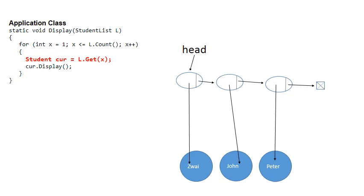The way a singly linked list is structured, if you want to go to the element at position 4, for example, you will have to start at the head and traverse until you get to the fourth element. Therefore, a singly linked list is called a linear access list. You can't jump to an exact position — you've got to go from the front. So the concept of getting something at a specific position does not work in a singly linked list.